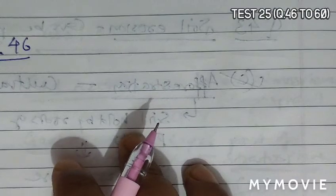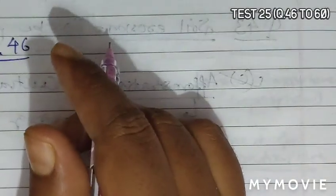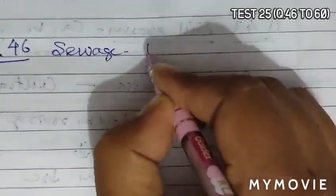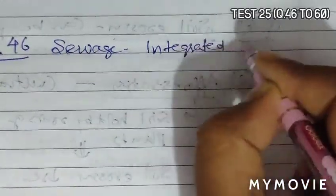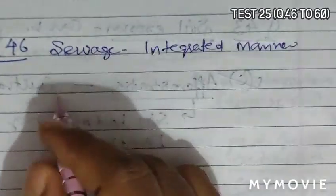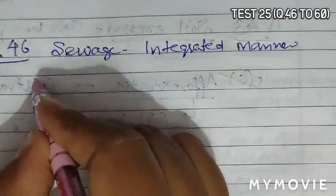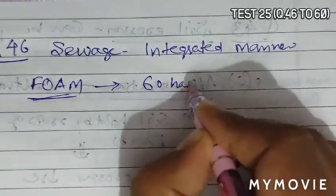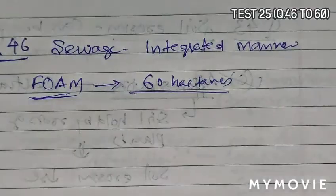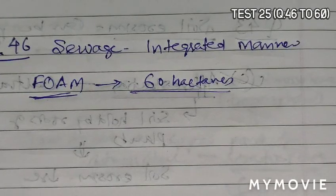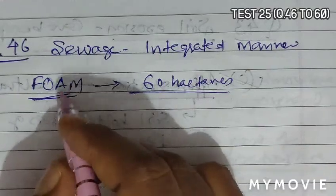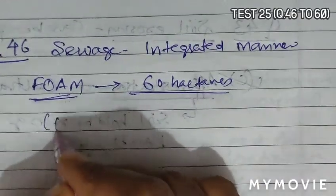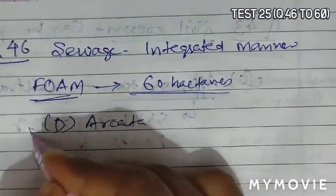Question 46 asks that wastewater including sewage can be treated in an integrated manner by a marshland of California. There is a France of Arctomarsis that is formed. They have taken 60 hectares of marshland and developed a sustainable sewage treatment plant in the Arcata village. So sewage is the integrated material which was developed in marshland of California in option D, that is Arcata. So D is the correct answer.